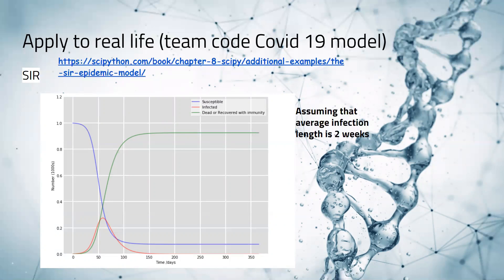My teammates and I used two of the models mentioned before: the SIR and SIRS models. As a quick reminder, SIR means susceptible, infectious, and recovered with inoculation. SIRS means susceptible, infectious, and recovered without inoculation, meaning individuals become susceptible again.